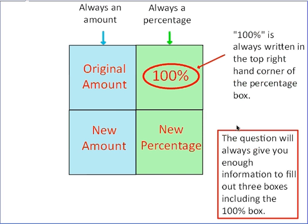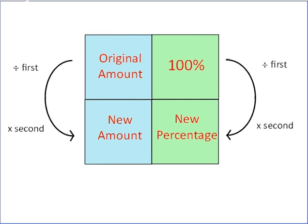So you should now understand that the right hand side is percentages, the left hand side is the amounts and we always have 100% in the top right corner. The way we use this box is by drawing arrows on. After we've filled in all the information we know, and there will always be three boxes filled and only one empty, we then draw arrows either from the top to the bottom of the box or from the bottom to the top of the box.